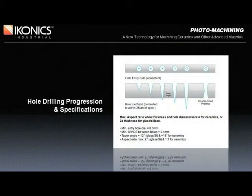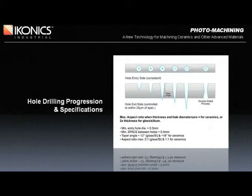It was mentioned earlier that there is a taper angle associated with photo machining. It's a natural result of the abrasion process during powder blasting. The diagram shown depicts what happens while producing a hole through a substrate. As one progresses from left to right, the entry hole size, defined by the photoresist, remains the same. Once breakthrough occurs, the exit side begins to enlarge. The longer the process, the larger the exit hole becomes, to a point.